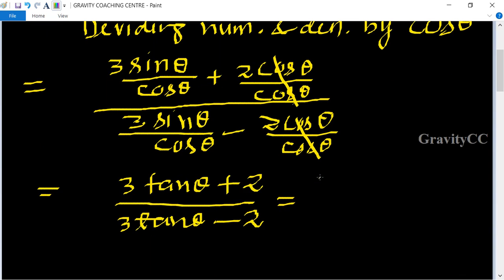Now we use here 3 into 4 upon 3 plus 2, upon 3 into 4 upon 3 minus 2. Here 3, 3 cancel.